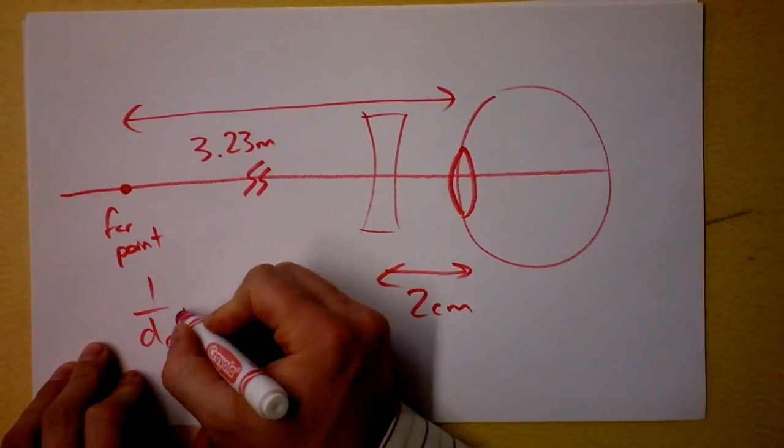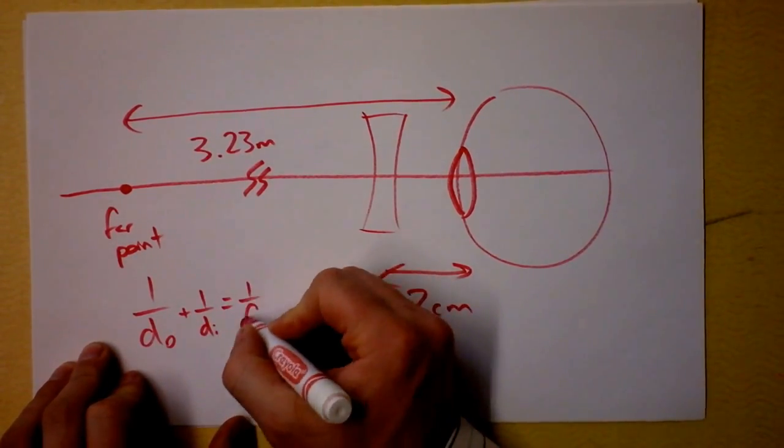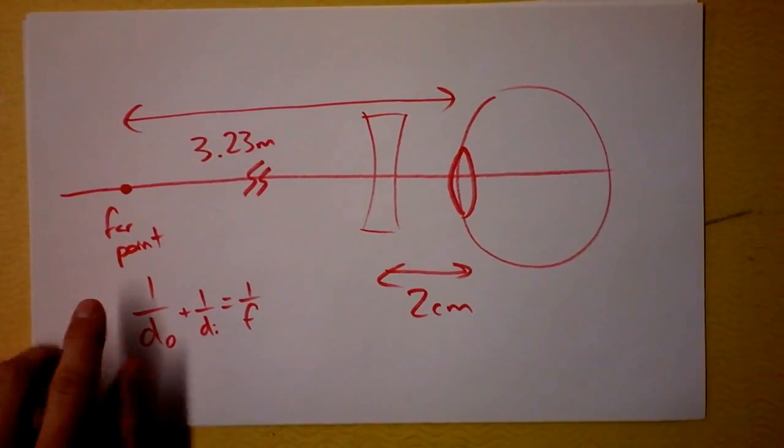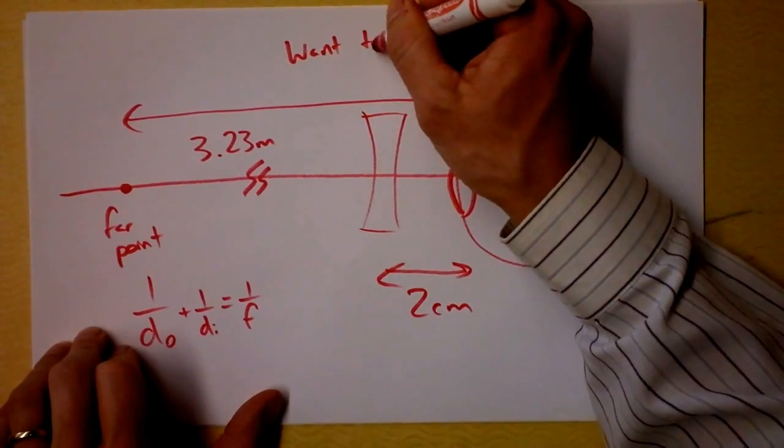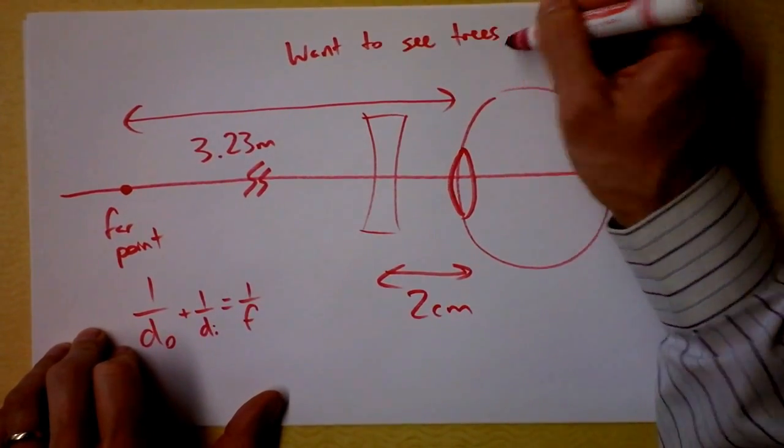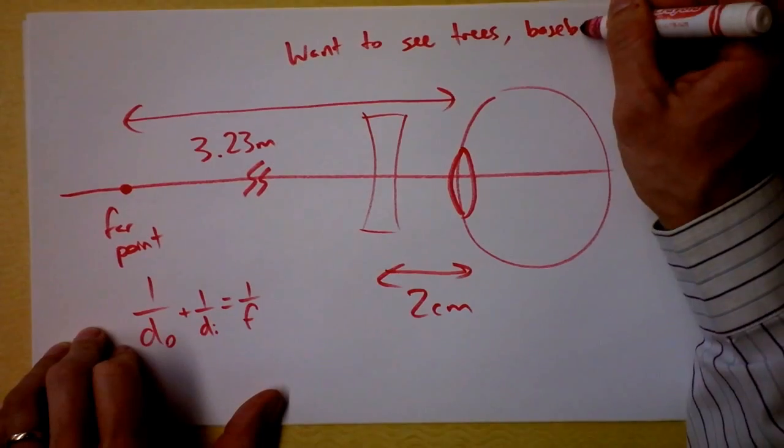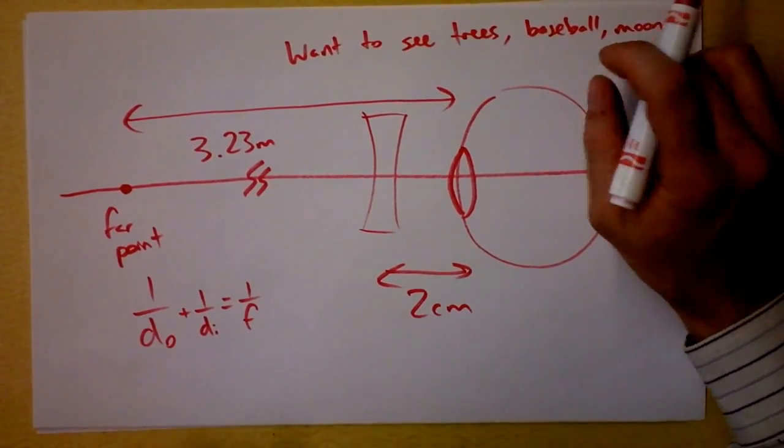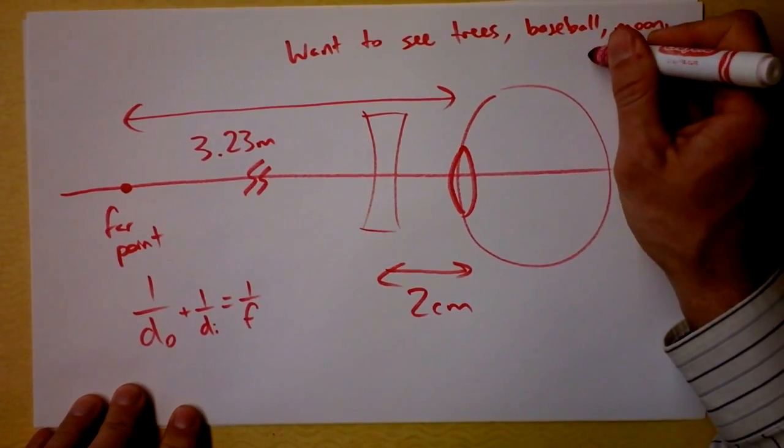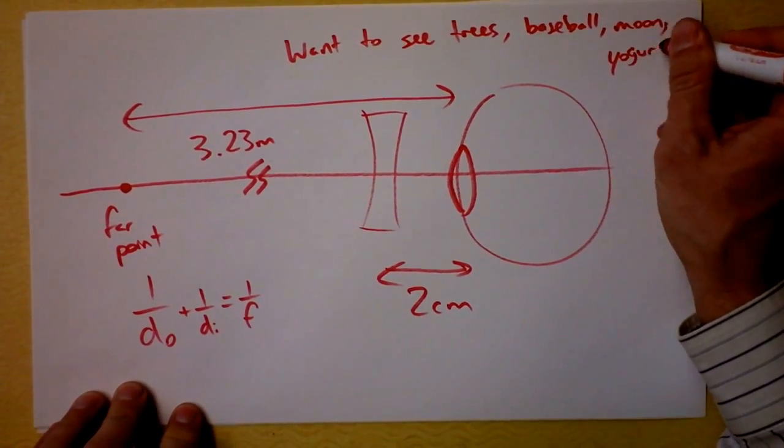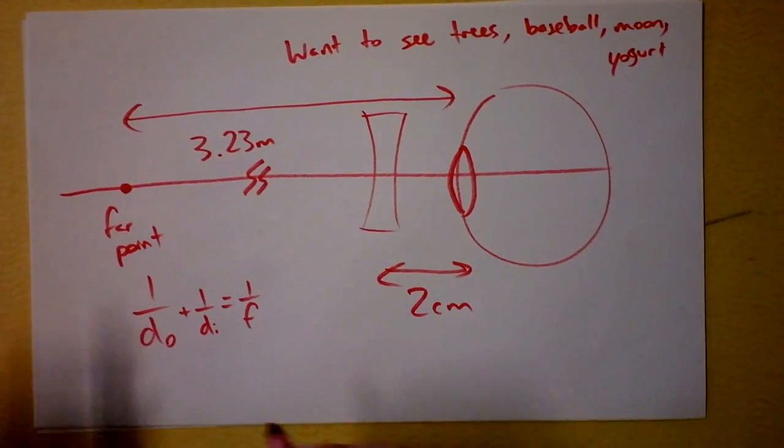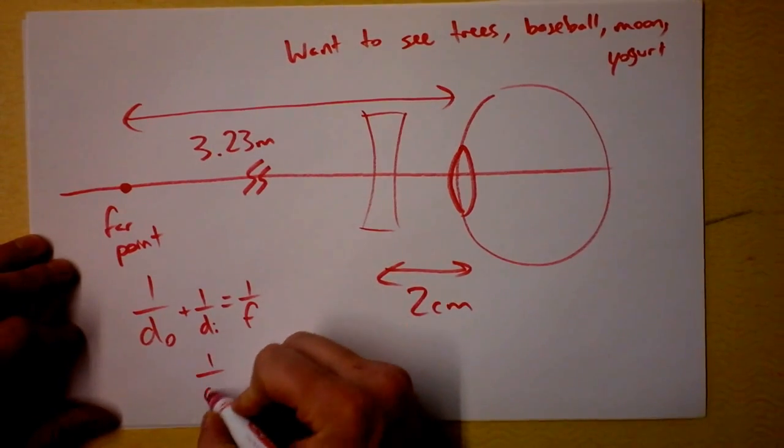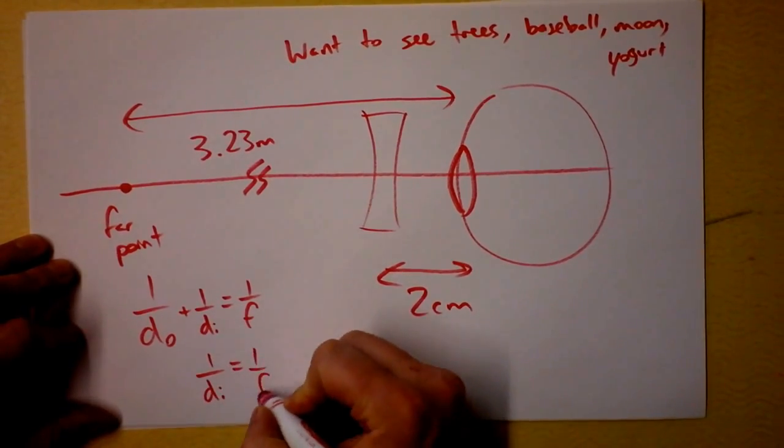We say 1 over d_o plus 1 over d_i is 1 over f. And I'm planning to, wait a second, where is the object? I want to see something at infinity, right? Trees, baseball, moon, things that are very far away. I want to see joy also. Joy, whoa, that's not how you spell joy. Maybe I want to see yogurt, if yogurt's really far away. Okay, so I'm saying that the object is infinitely far away. Okay, so this equation reduces to 1 over d_i is 1 over f.